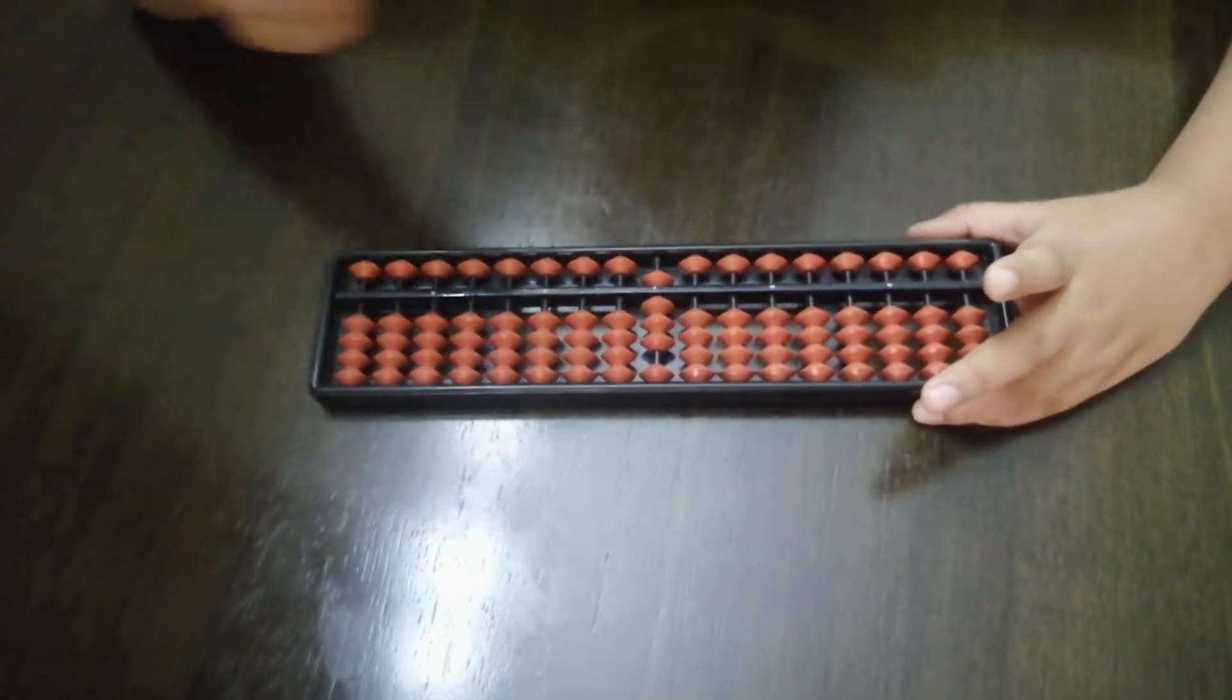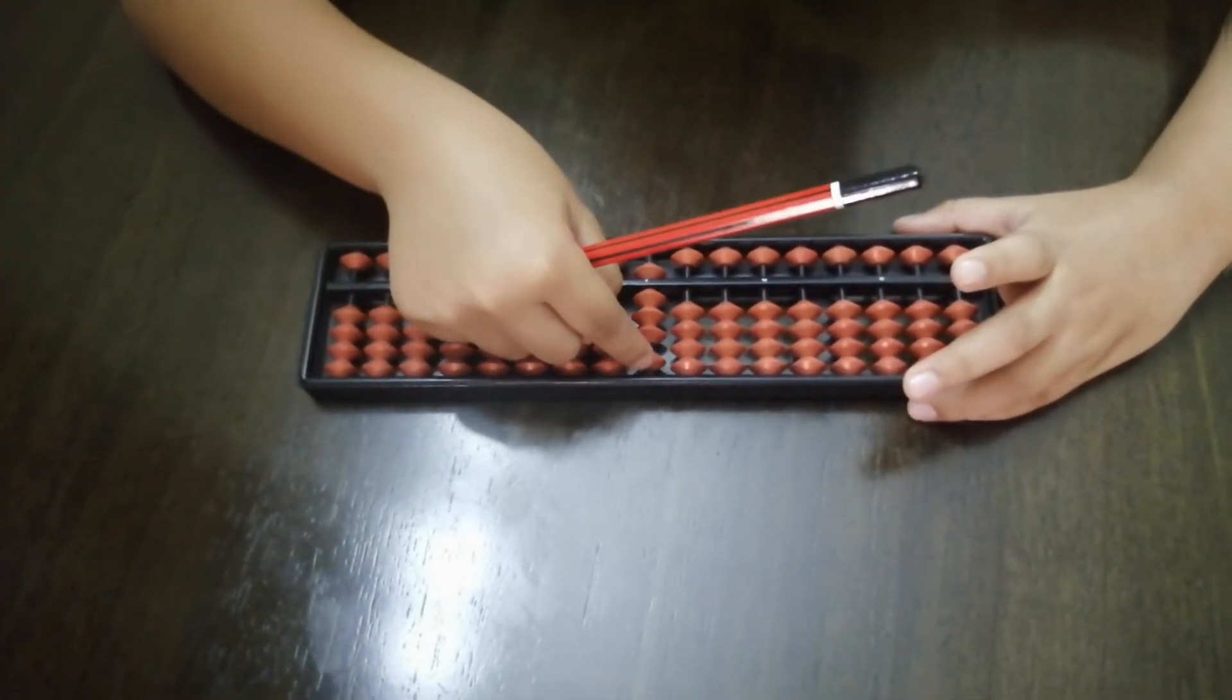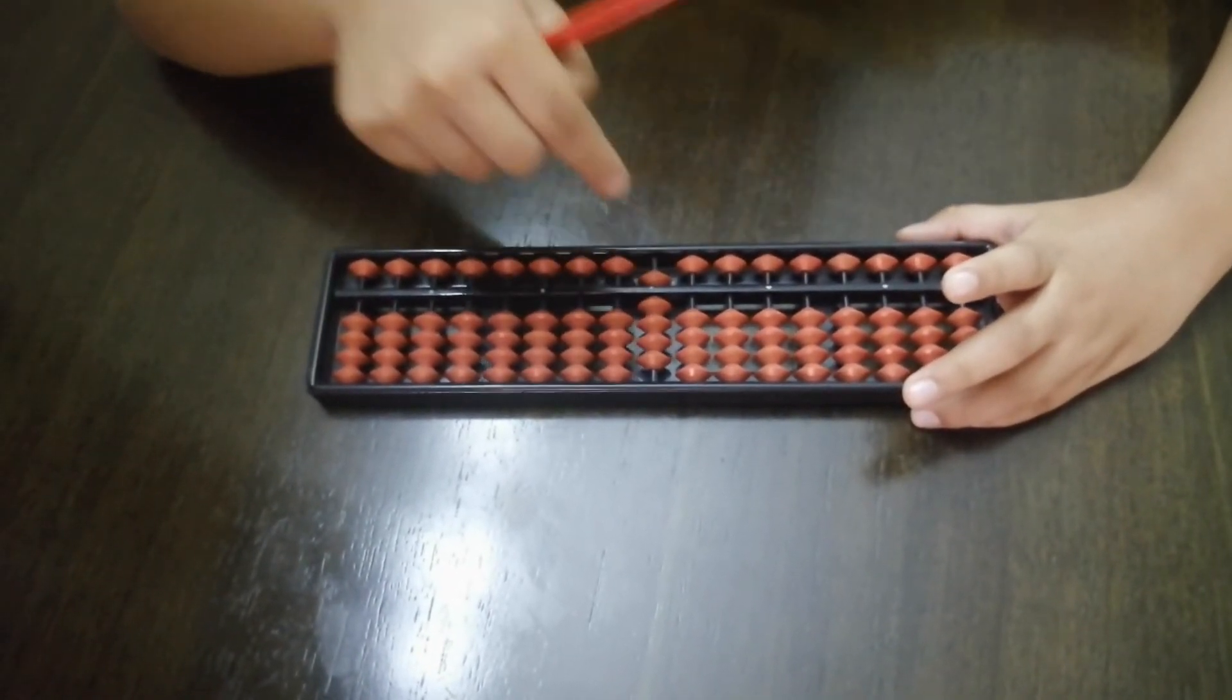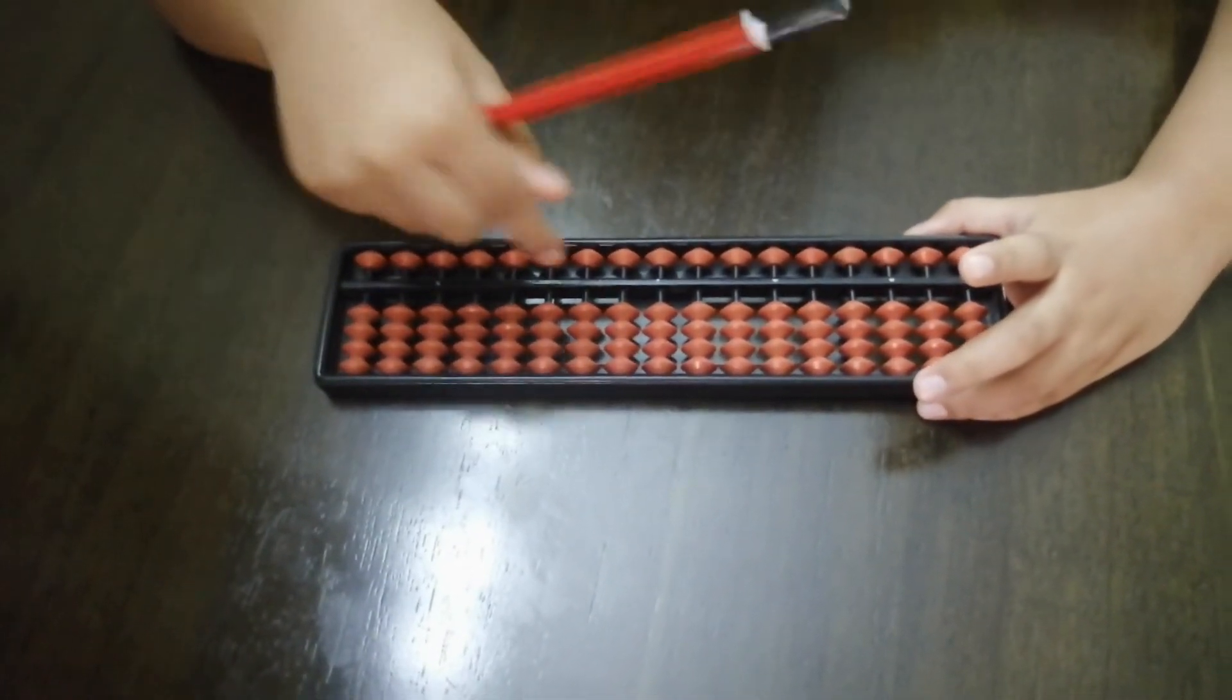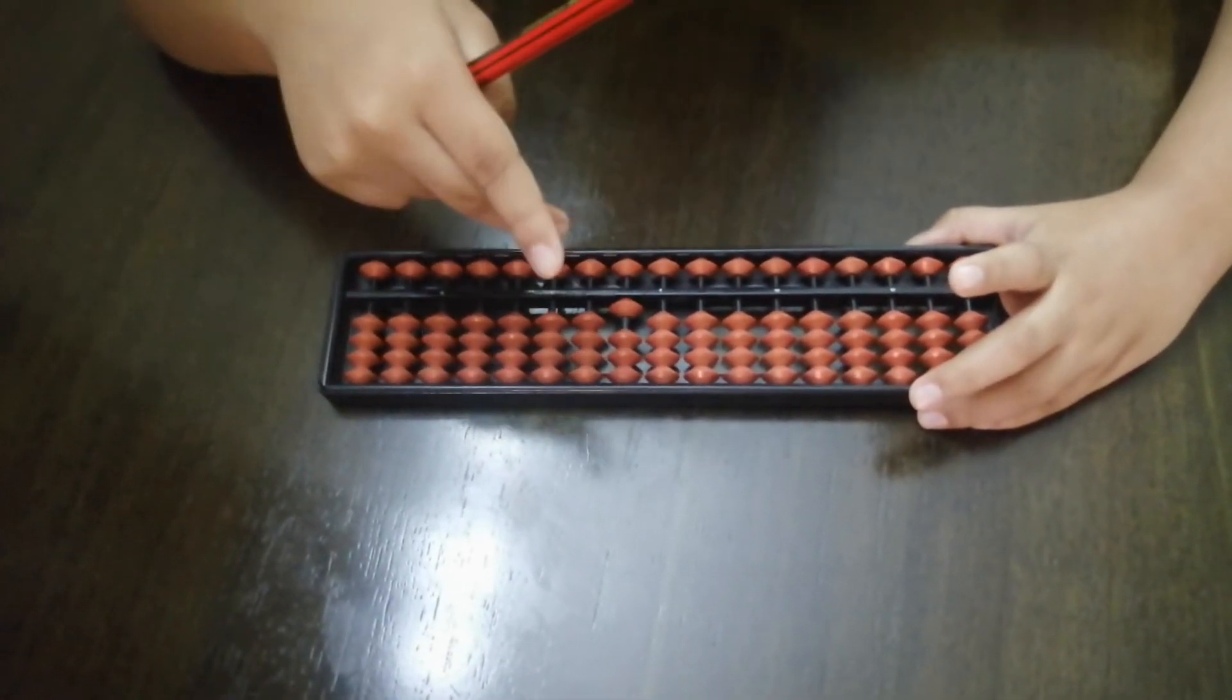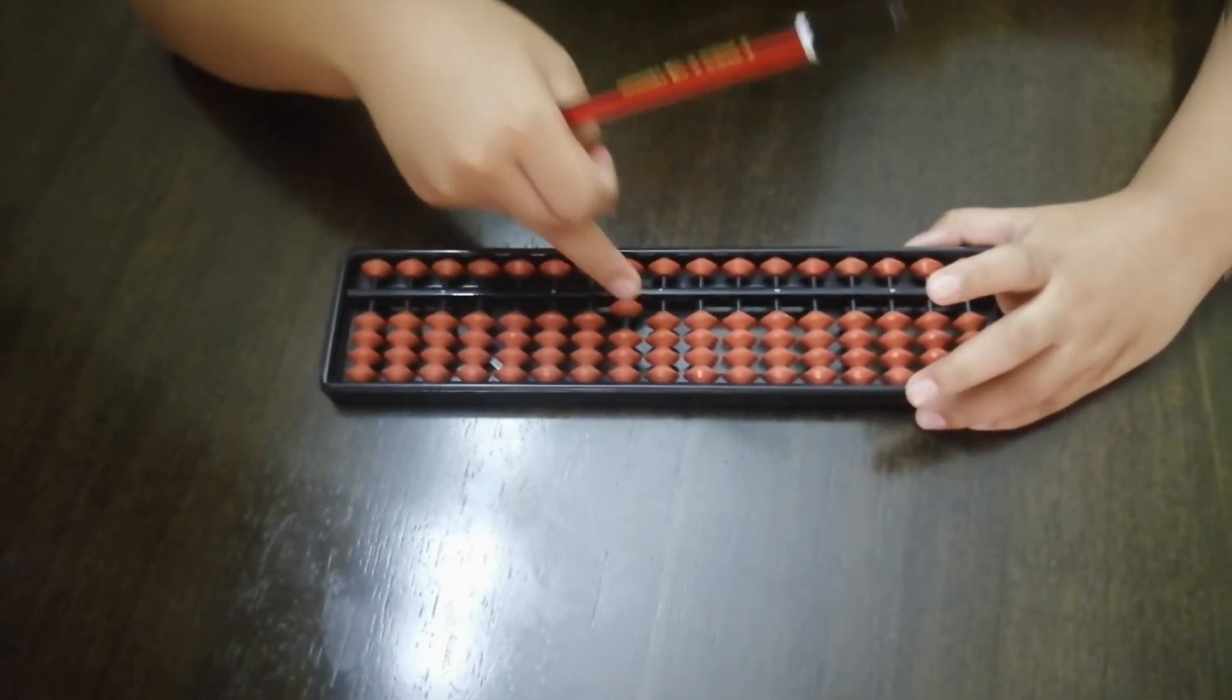Then 8. 5 plus 3 is 8. Next, it will be in the 10's place. You need to come to the 10's place and put 1. And over here, 0 and 1. That makes 10.